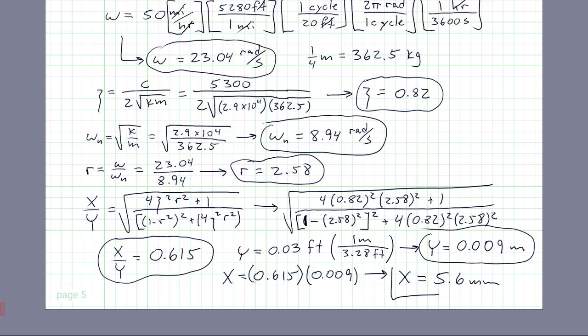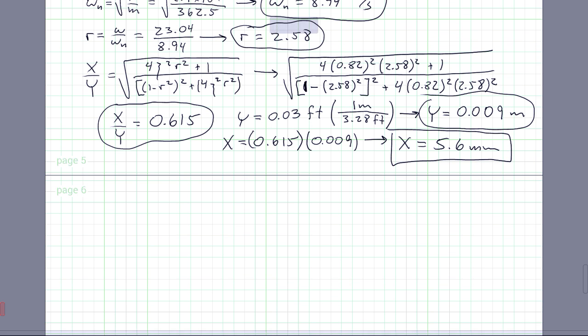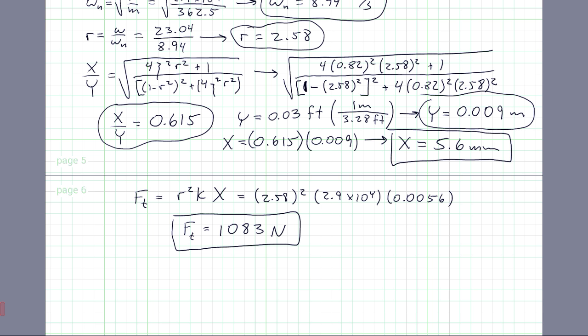And so, finally, the force transmissibility, f of t, is simply just plugging in r squared k times x, which ends up being my r is 2.58 squared, k is 2.9 times 10 to the 4th times 0.0056. That's what we just found for x. So my transmitted force is 1,083 newtons. Nice. So that's actually quite a bit of force. That's close to about 225 pounds. I don't know how realistic these numbers are, like the spring constant and all that.